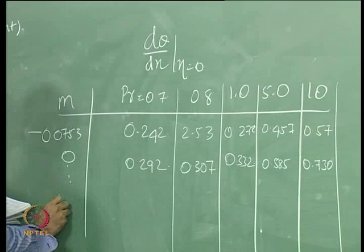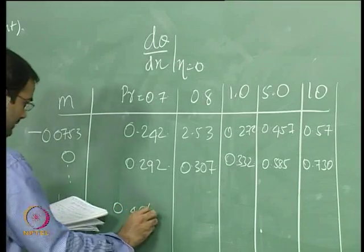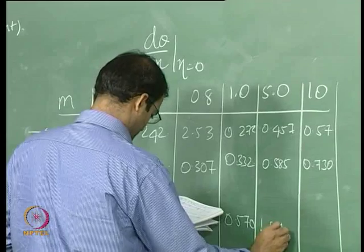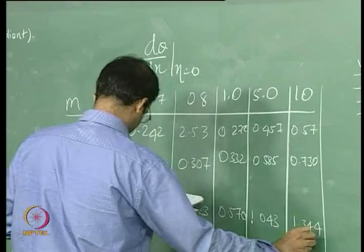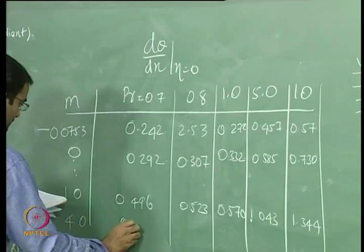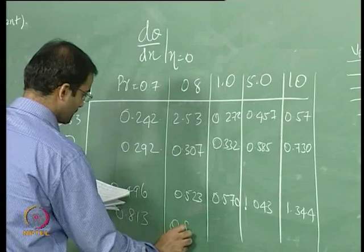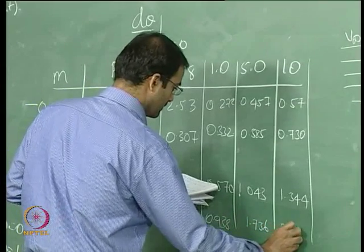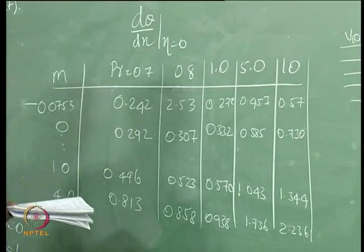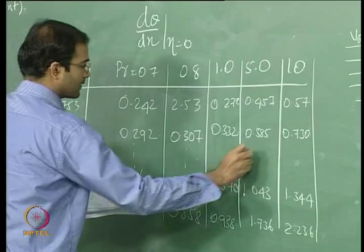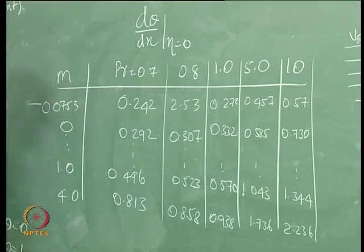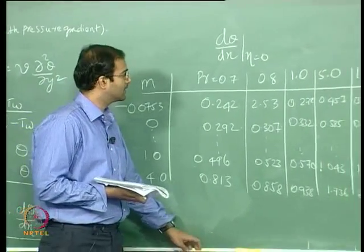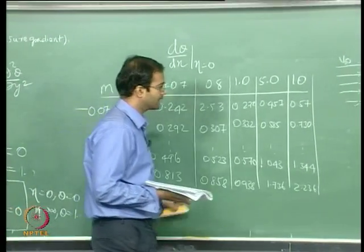For M = 1 (stagnation flow), the tabulated values are 0.496 at Pr = 0.7 and 0.523 at Pr = 1. I am giving you these tabulated values so that tomorrow when I ask you to compute using the shooting method you can match with them.